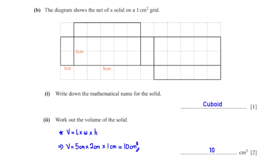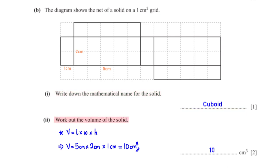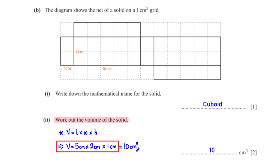The diagram shows the net of a solid on a 1 cm square grid. Write down the mathematical name for the solid. The solid is a cuboid. Work out the volume of the solid. Using the formula for the volume of a cuboid, from the net the length L is 5 cm, the width W is 2 cm, and the height H is 1 cm. This gives us 10 cm³.